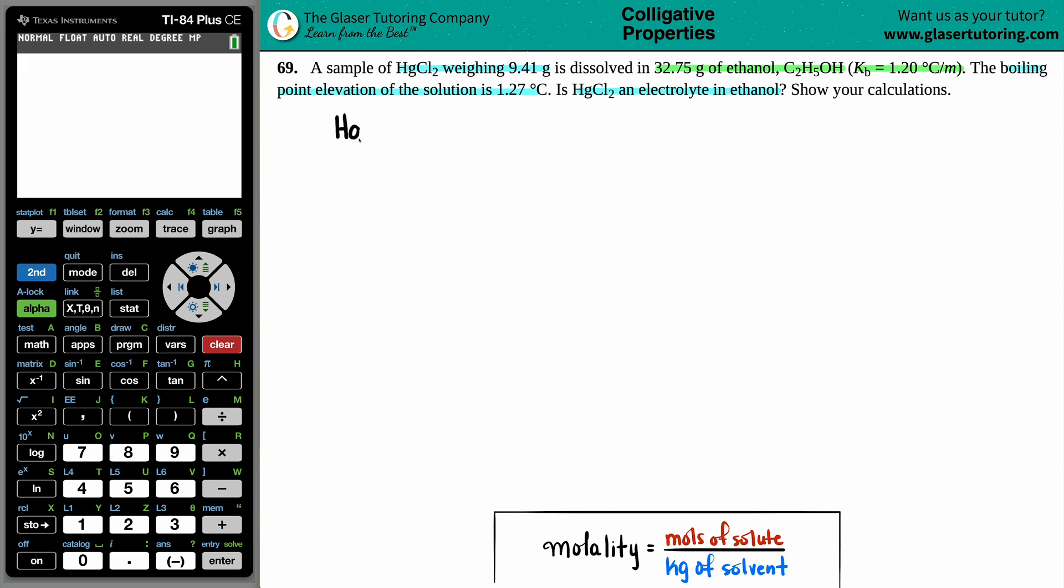So, by that, the HgCl2 is acting as the solute. And the ethanol, the C2H5OH, since you're placing the HgCl2 into the ethanol, that is your solvent. And the combination of the two, once they're in the same container, that's a happy solution.